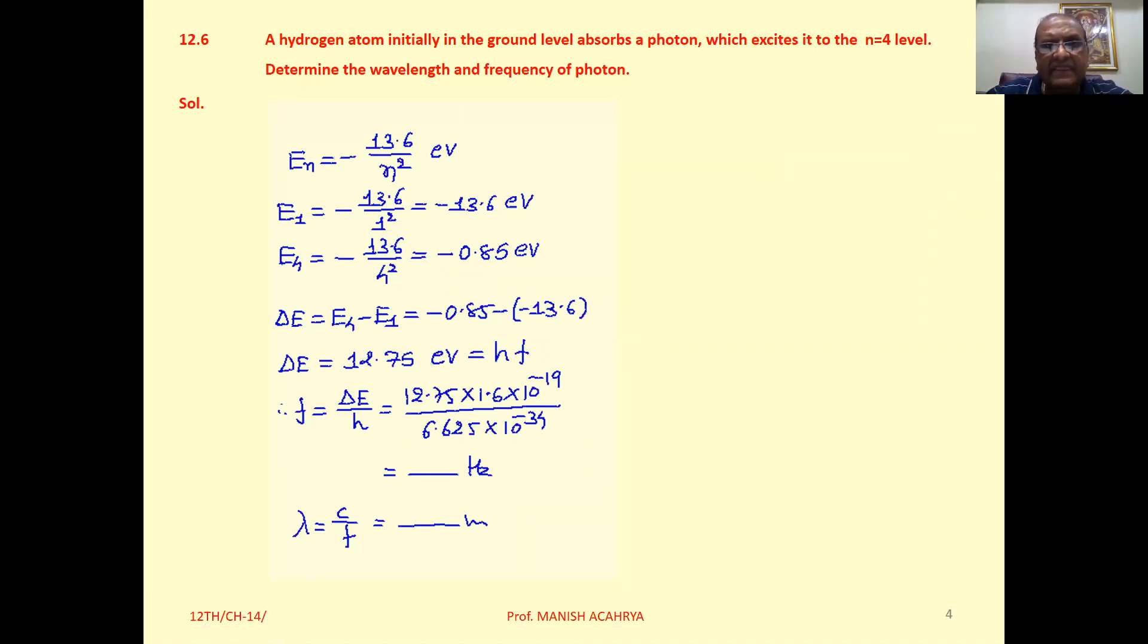The amount of energy emitted is the difference of these two energies. So delta E equals E4 minus E1. That is minus 0.85 minus minus 13.6, which comes to 12.75 electron volts. The energy of the photon equals hf.